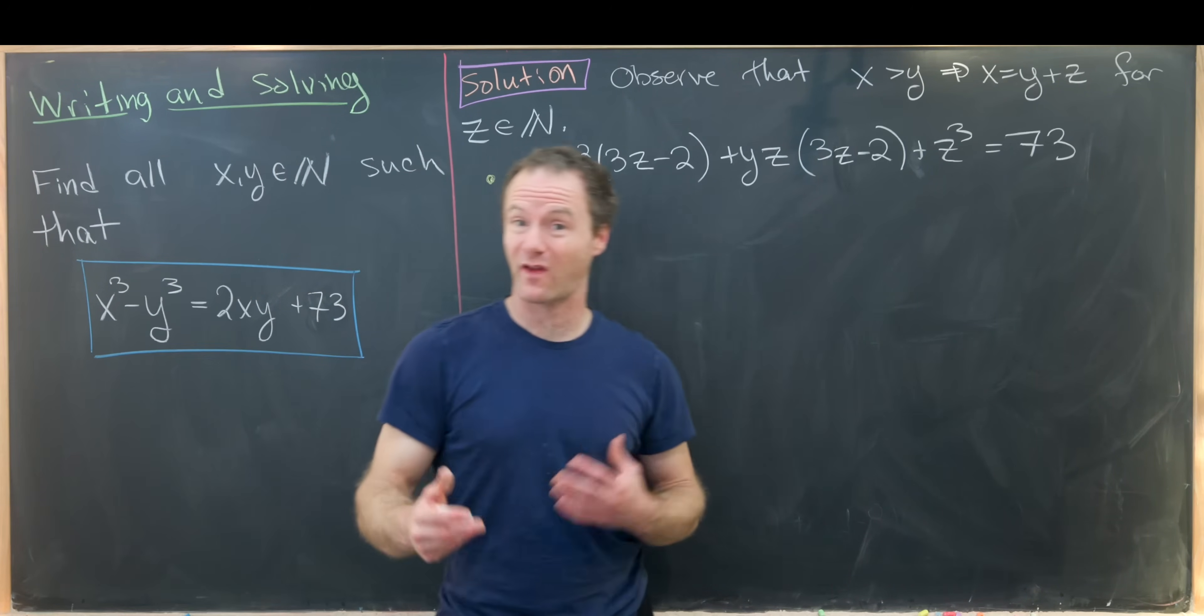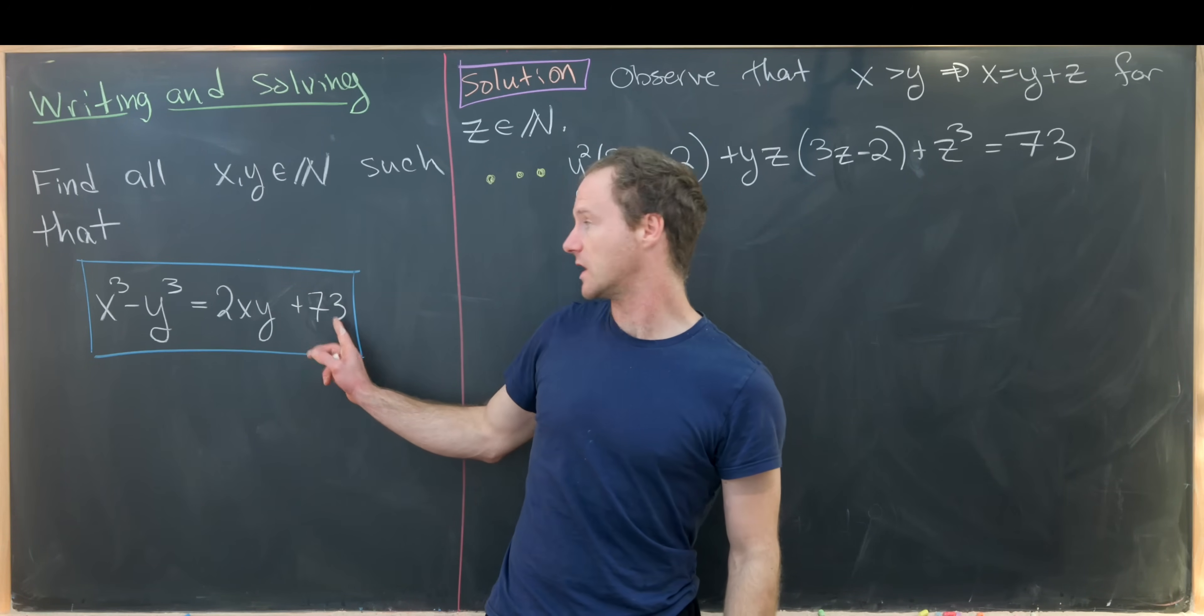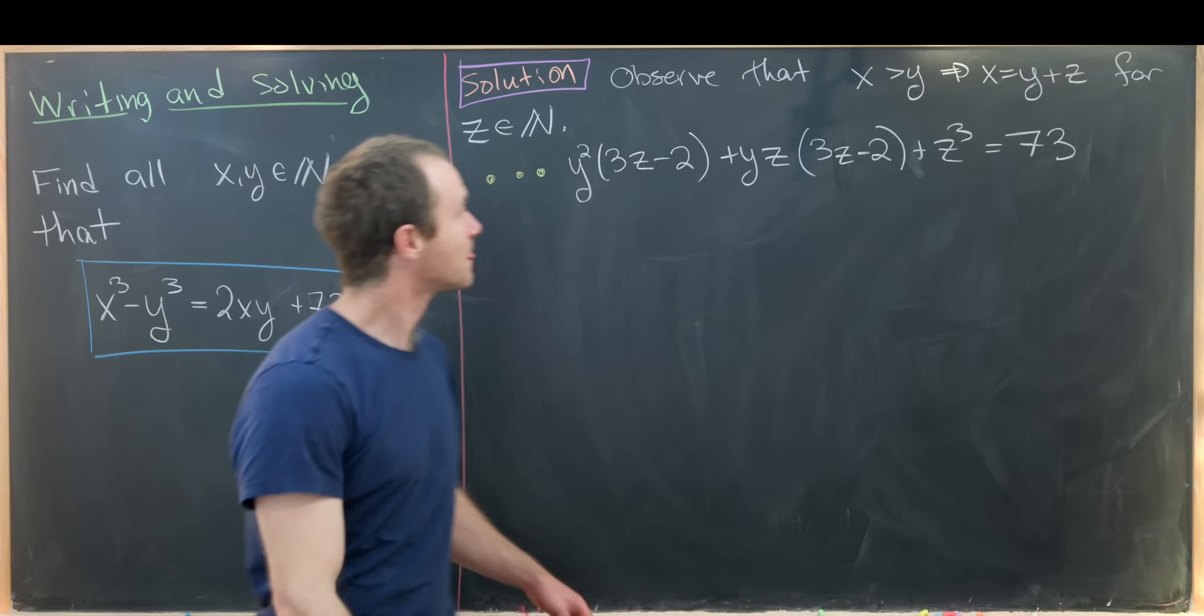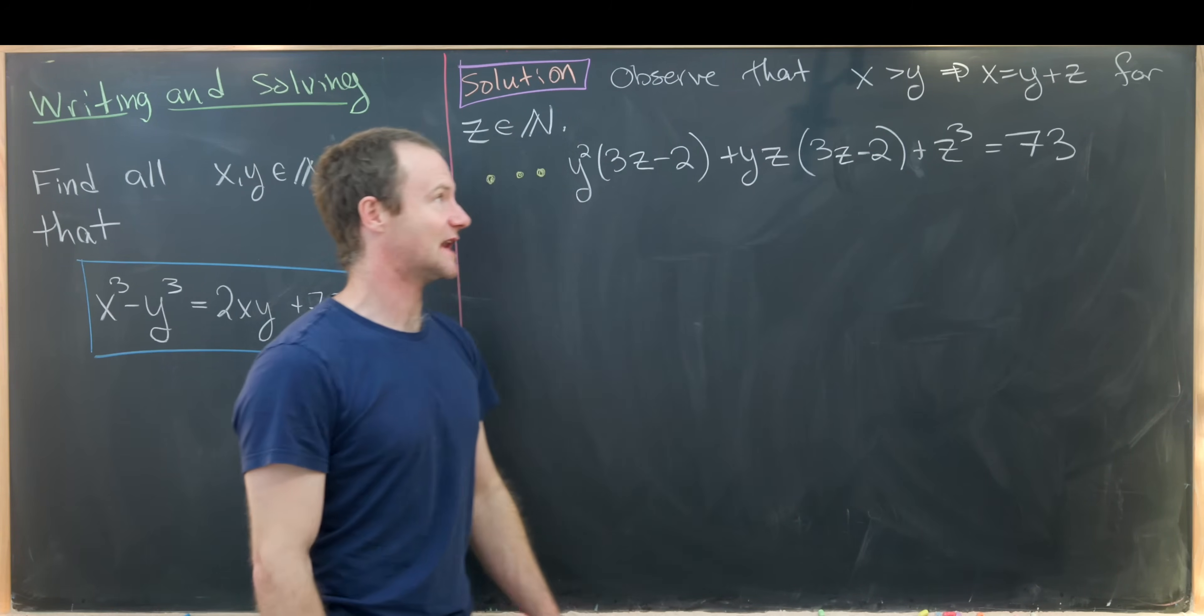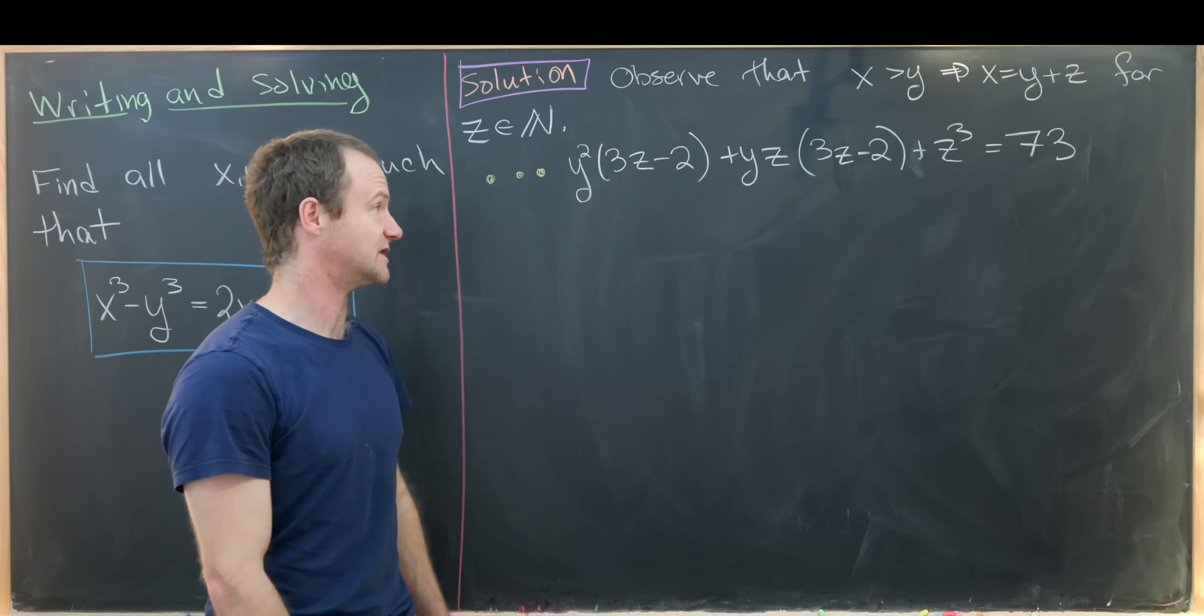On the last board we determined that this 73 would be a nice number to put here. We could have played it a little bit more complicated and chosen this number 2 and the number 73, but I chose the 2 ahead of time just kind of at random.